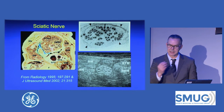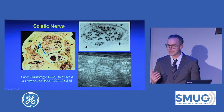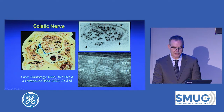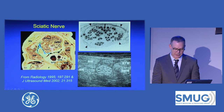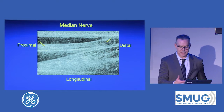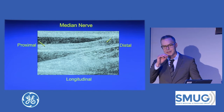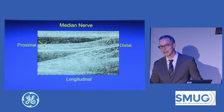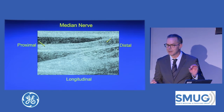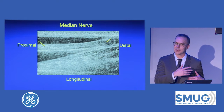In short axis, we can track nerves and see them as a cable. With a larger nerve like this, they describe a honeycomb appearance, where you have hypoechoic nerve fascicles and echogenic connective tissue around the fascicles. Because the nerve has both hypoechoic and echogenic parts, remember the nerve fascicles are hypoechoic and the connective tissue is hyperechoic.